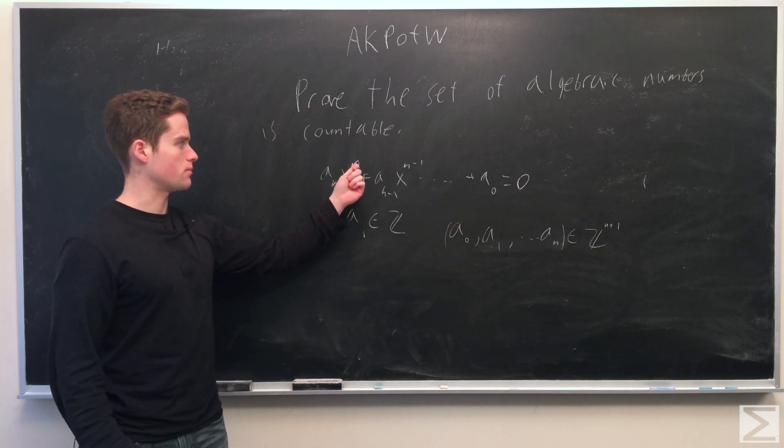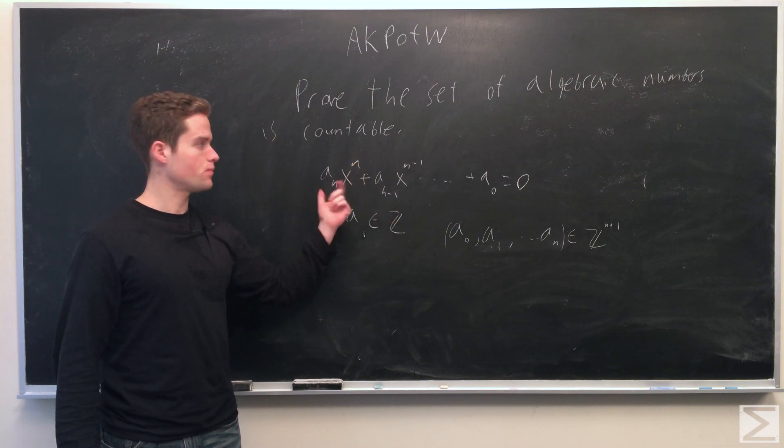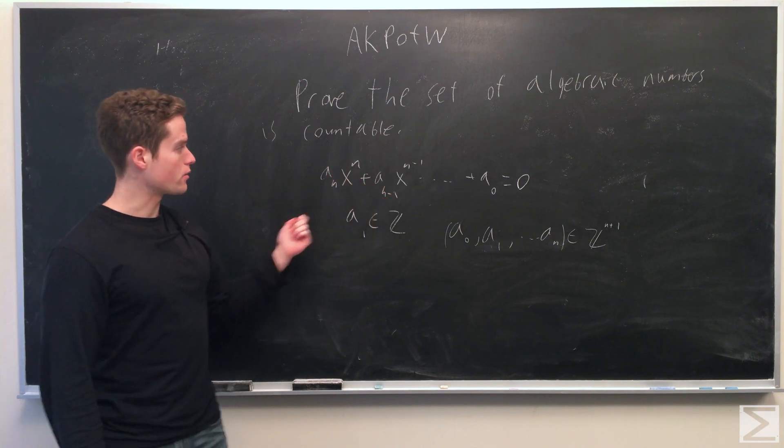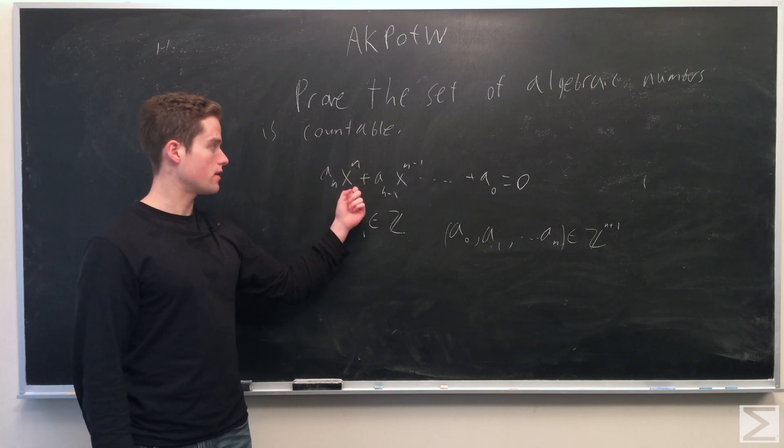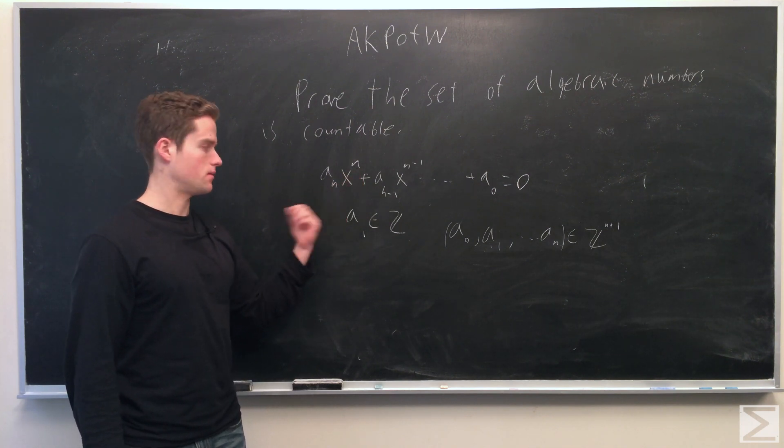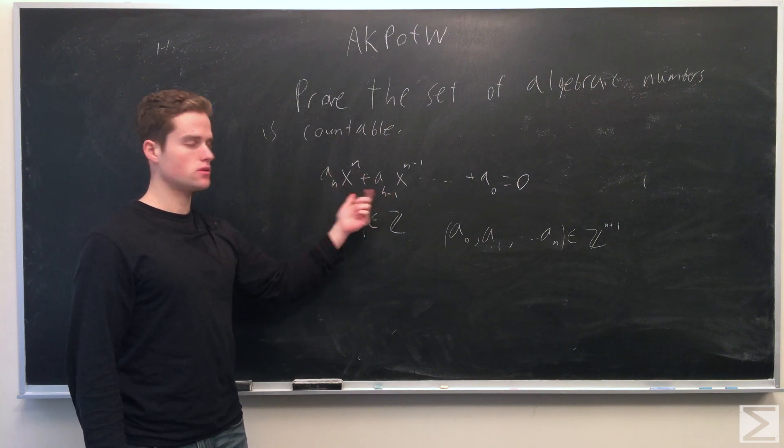So given some n, the number of different polynomials with a_n x^n and a_n not equal to 0 will be a countable set. And note, we also have at most n roots, so that corresponds to at most n algebraic numbers for each one of these polynomials.